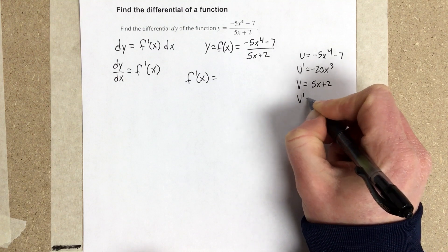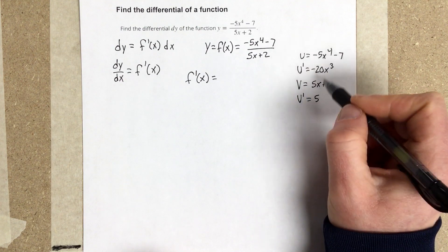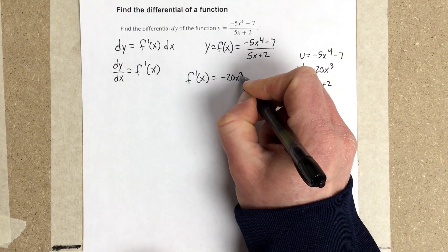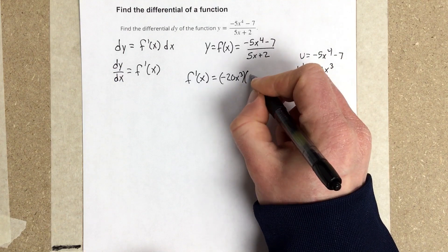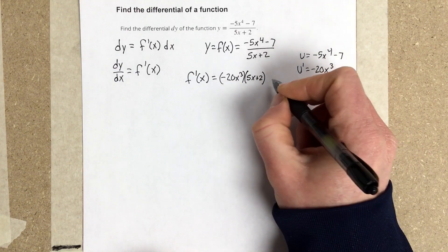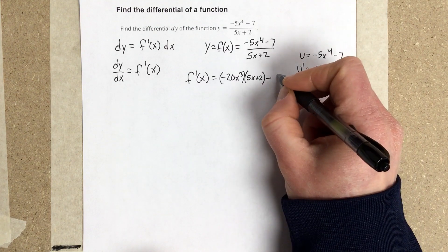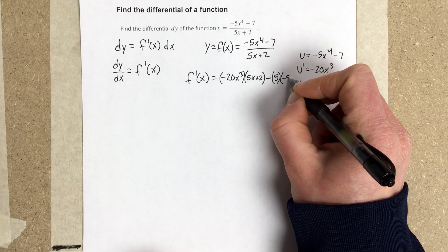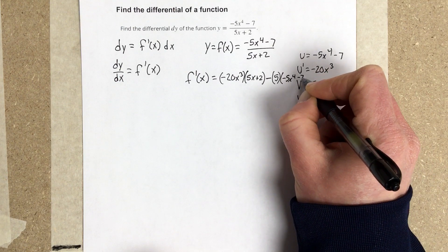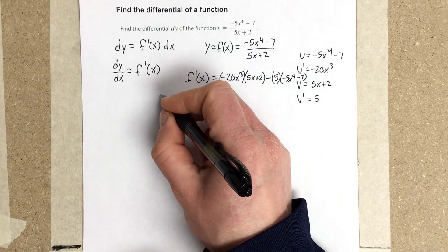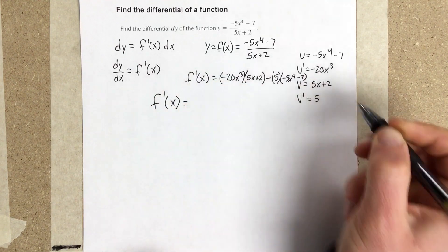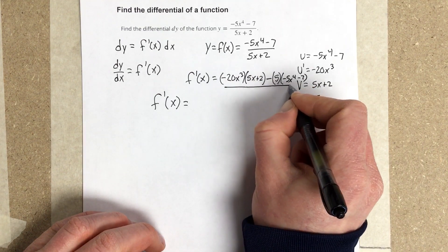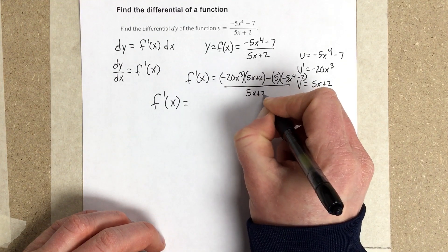And v prime is 5. So I'm going to use u prime times v, so negative 20x cubed times 5x plus 2 minus 5, which is v prime, times negative 5x to the 4th minus 7. I forgot to divide by v squared. Let's do that, divide by 5x plus 2 squared.